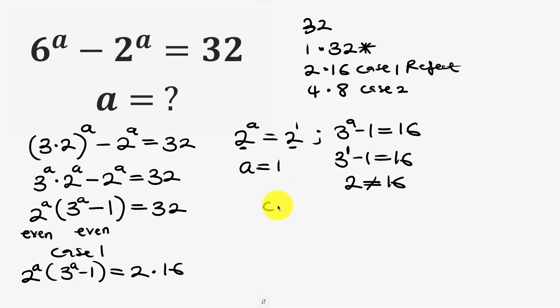Now let's move on to case 2. So for case 2 we have 2 to power a times 3 to power a minus 1 to be equal to, the factors are 4 times 8. Now let's compare. We have the smaller factor which is 2 to power a, equate that to the smaller factor which is 4.